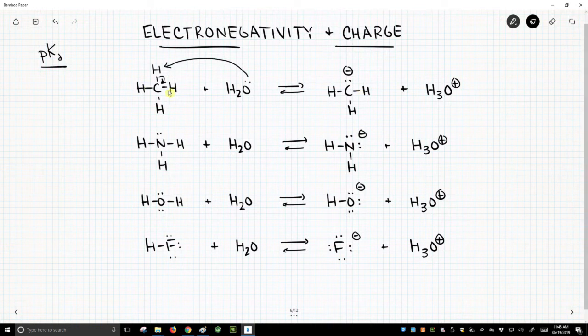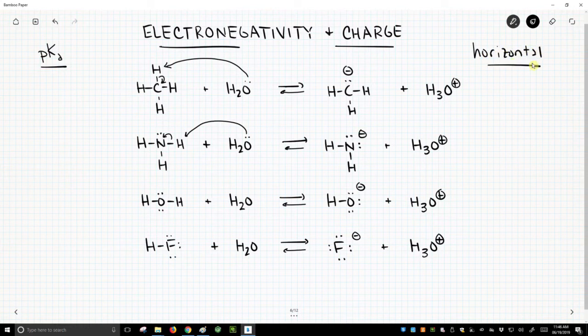We have a series going from carbon to nitrogen to oxygen to fluorine. Let's make this clear. We can pluck off one of these hydrogens on the atom: carbon, nitrogen, oxygen, and fluorine. We're moving straight across the periodic table, in the second period or second row.